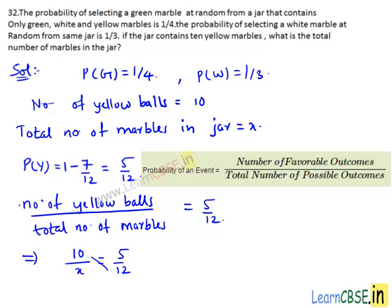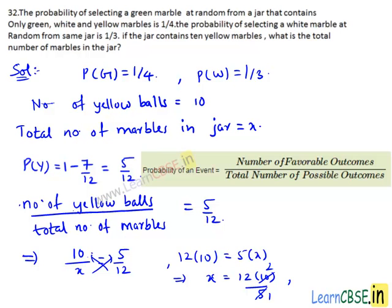On cross multiplying we get 12 × 10 = 5 × x. This implies x = (12 × 10) / 5. Since 5 is a common factor of both numerator and denominator, 5 goes into 5 once and 5 goes into 10 twice. Then x = 12 × 2 = 24. Therefore the total number of marbles in the jar equals 24.